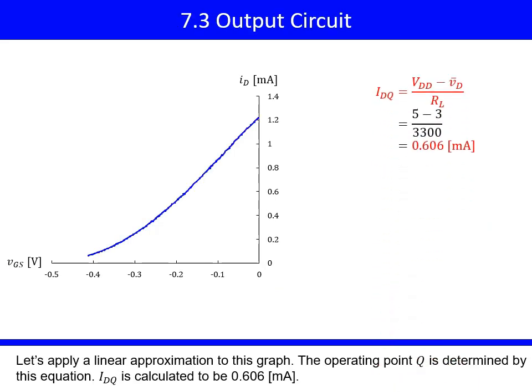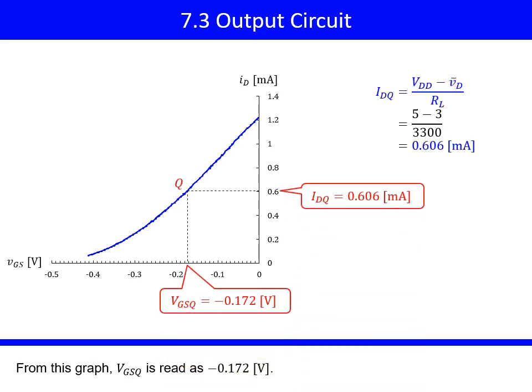Let's apply a linear approximation to this graph. The operating point Q is determined by this equation. IDQ is calculated to be 0.606 milliamps. From this graph, VGSQ is read as negative 0.172 volts.